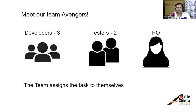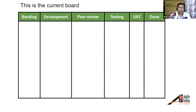In that story, let's assume we have a team called the Avengers — three developers, two testers, and a product owner. The team assigns tasks to themselves; nobody tells team members which work to pick. This is their team board: it has a backlog column, a development column, a peer review column, and a testing column.